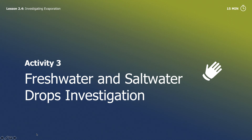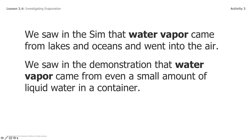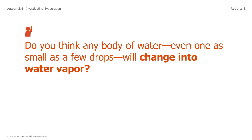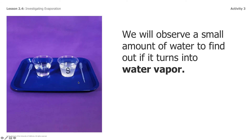Next activity — this is one you are going to be doing on your own at home. Hopefully you're able to do this; if not, don't sweat it — I know not everybody has the supplies needed. You saw in the sim that water vapor came from lakes and oceans and went into the air. We saw in the demonstration that water vapor came from even a small amount of liquid in the container. So do you think that any body of water, even one as small as a few drops, will change into water vapor? We're going to observe a small amount of water to find out if it turns into water vapor.